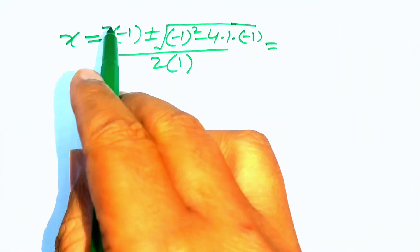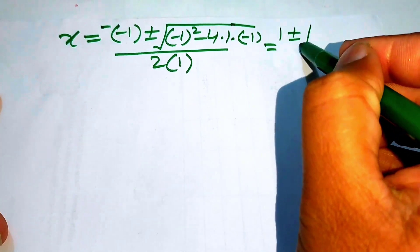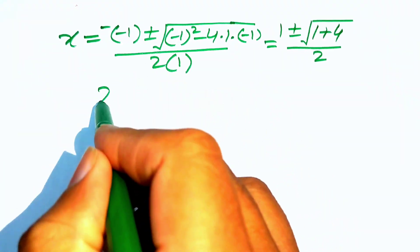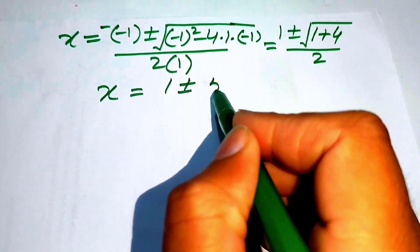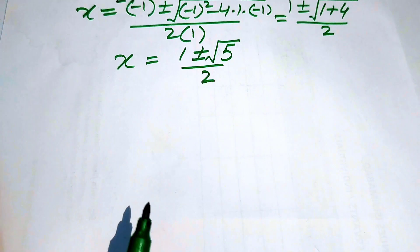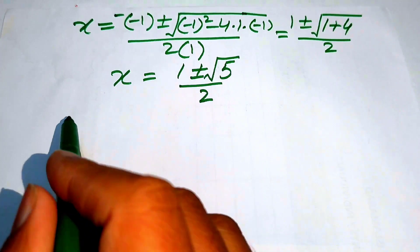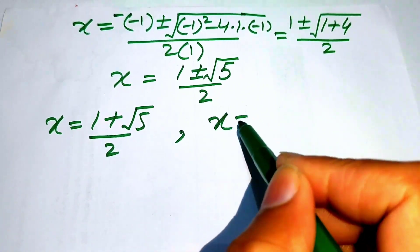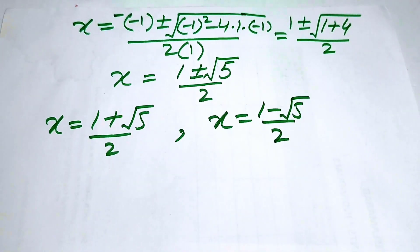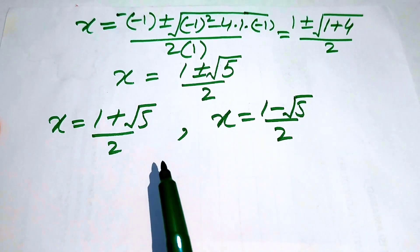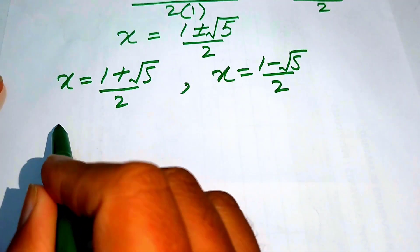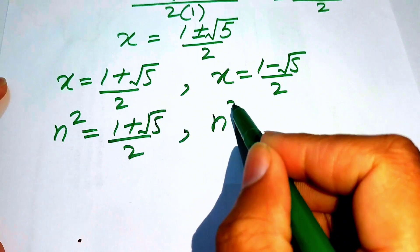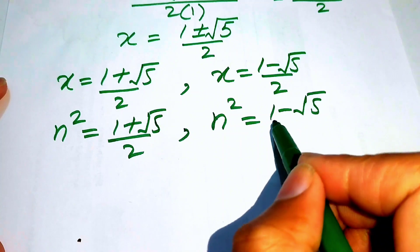Simplifying, negative times negative gives positive 1, and minus 1 squared is 1, and minus times minus gives plus 4, all divided by 2. We get x equals 1 plus or minus the square root of 5, divided by 2. The two cases are x equals (1 plus √5)/2 and x equals (1 minus √5)/2. Back-substituting x equals n squared gives n squared equals (1 plus √5)/2 and n squared equals (1 minus √5)/2.